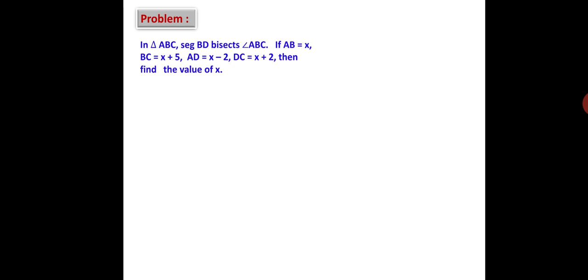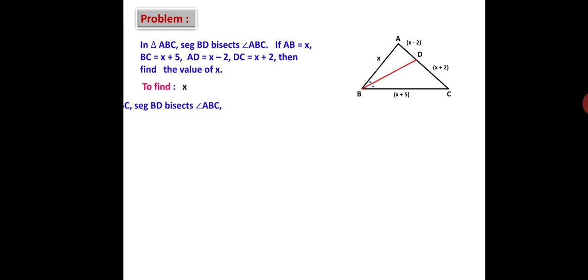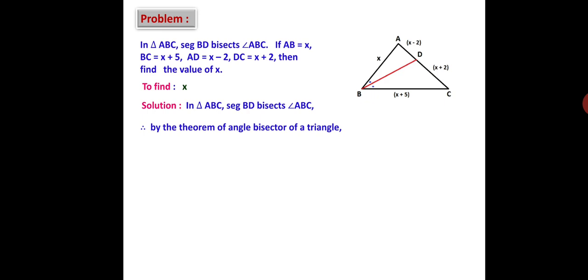Now let us solve a problem based on this property. In triangle ABC, segment BD bisects angle ABC. AB = X, BC = X + 5, AD = X − 2, DC = X + 2. Find the value of X. By the angle bisector theorem, AB/BC = AD/DC. Substituting the values: X/(X + 5) = (X − 2)/(X + 2). Cross multiplying: X(X + 2) = (X − 2)(X + 5).